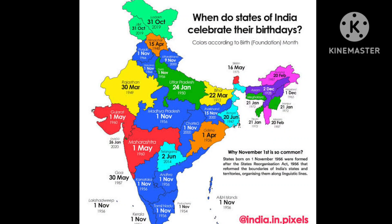This map shows when Indian states celebrate their birthdays. November 1st is very common — many states were born on November 1, 1956, after the States Reorganisation Act of 1956, which reformed the boundaries of India's states and territories and organized them on linguistic lines. The newest state in India is Telangana.